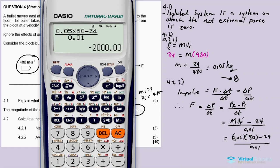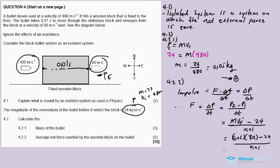Let's calculate: 0.05 times 80 minus 24 divided by 0.01. The answer is minus 2000 Newtons. This negative sign simply says the block is applying an opposite force on the bullet according to Newton's third law. If you apply a force on object A, object A will exert an opposite force on object B, but the forces are equal in magnitude.